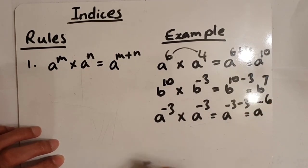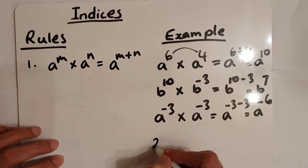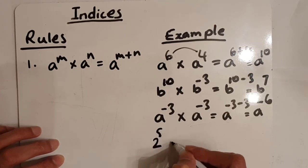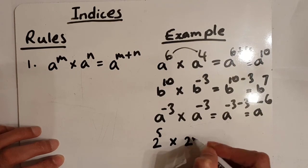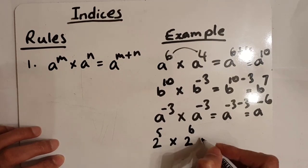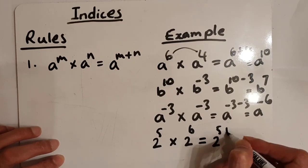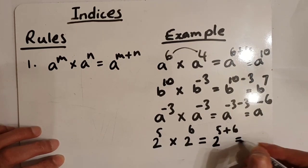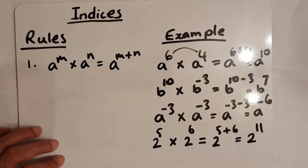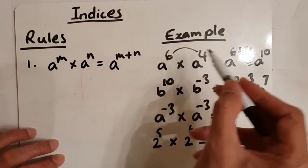You could also have examples in terms of numbers. For example, if we have two to the power of five times by two to the power of six, and the question asks you to write down the answer as a single power of two, then we're going to write it as two to the power of five add six, which is two to the power of eleven. That was the multiplication rule: when you multiply, we add the powers.